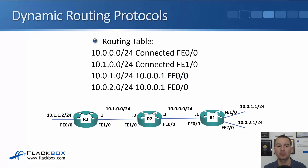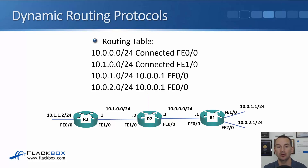The routing table on R2 will now show that it's directly connected to the 10.0.0.0/24 network on FastEthernet 0/0, and also directly connected to 10.1.0.0/24 on FastEthernet 1/0. The two routes it learned from R1 — 10.0.1.0/24 and 10.0.2.0/24 — both have a next hop of 10.0.0.1, which is R1, reachable out interface FastEthernet 0/0.